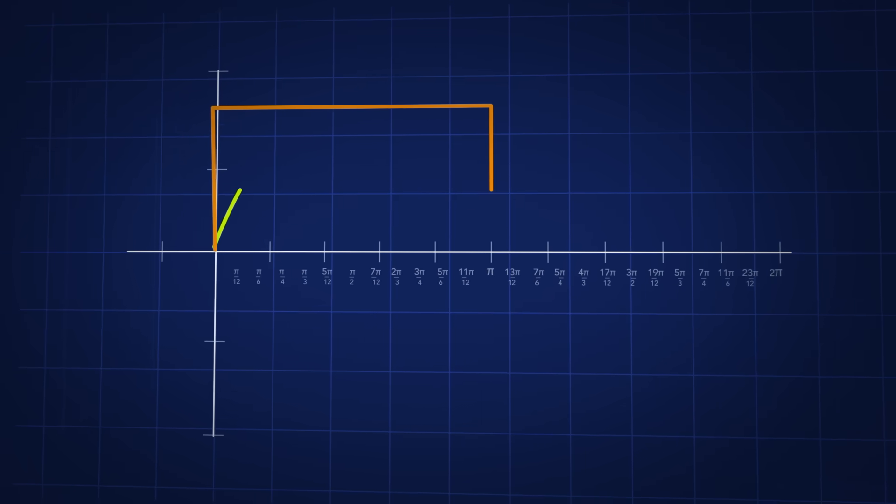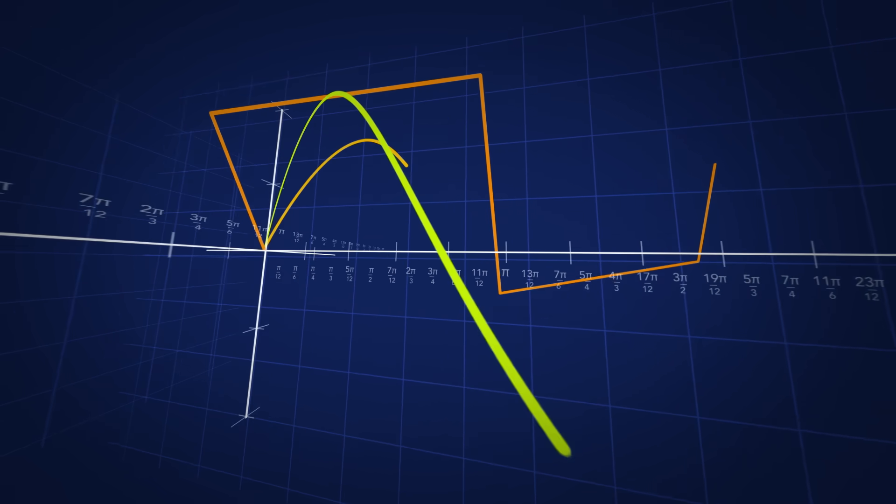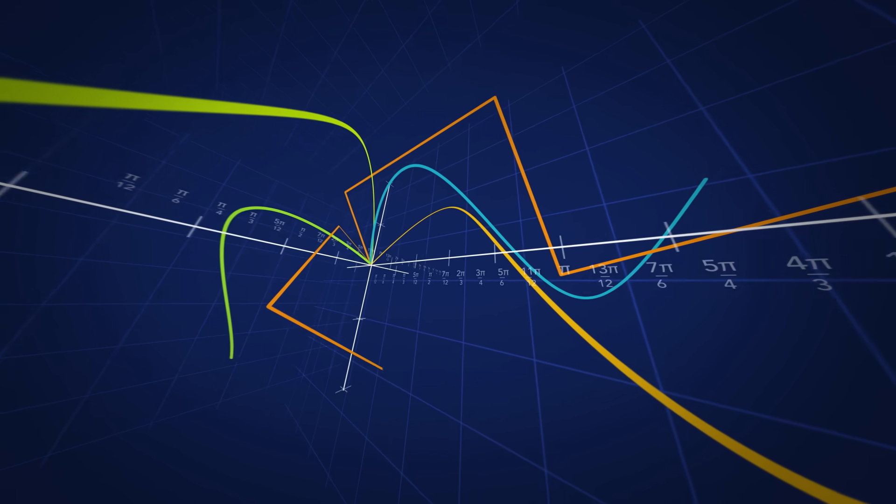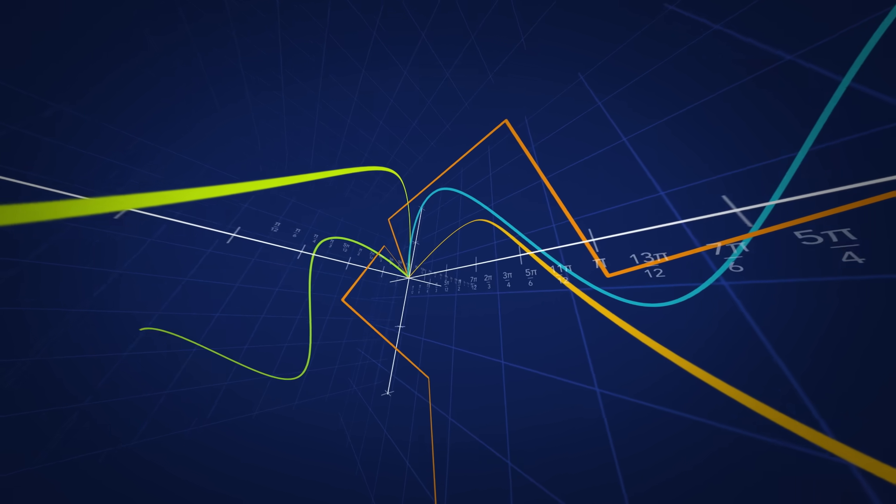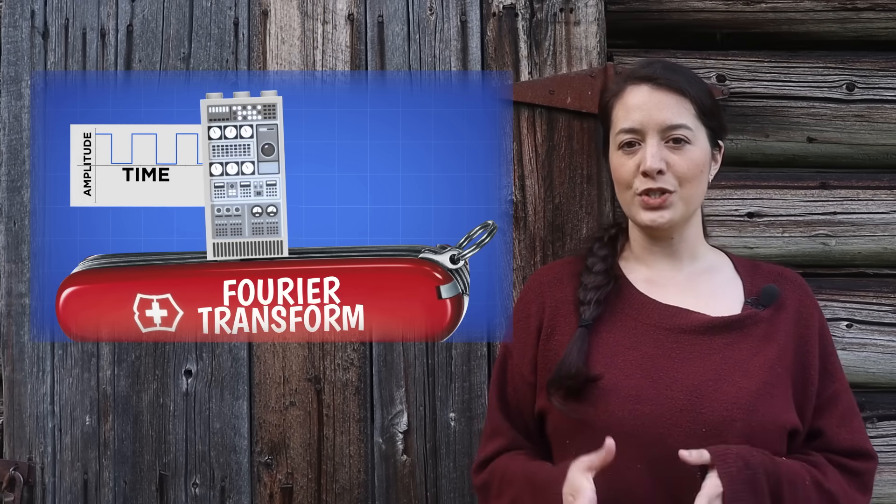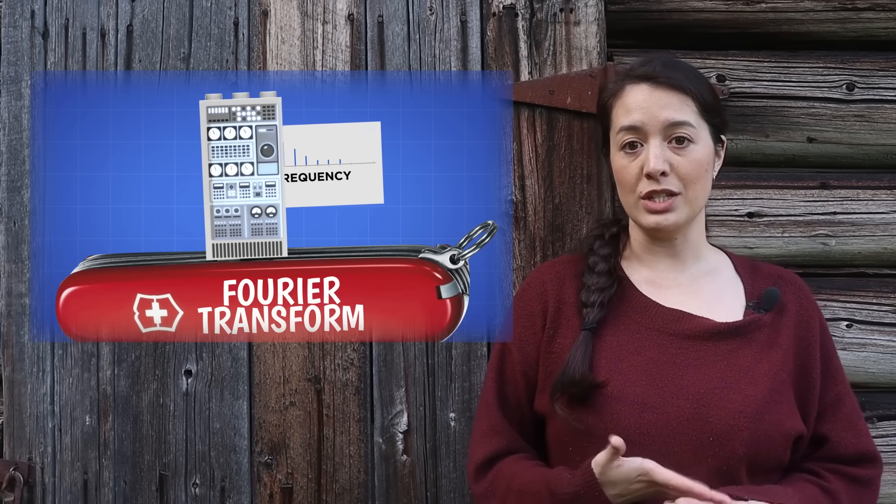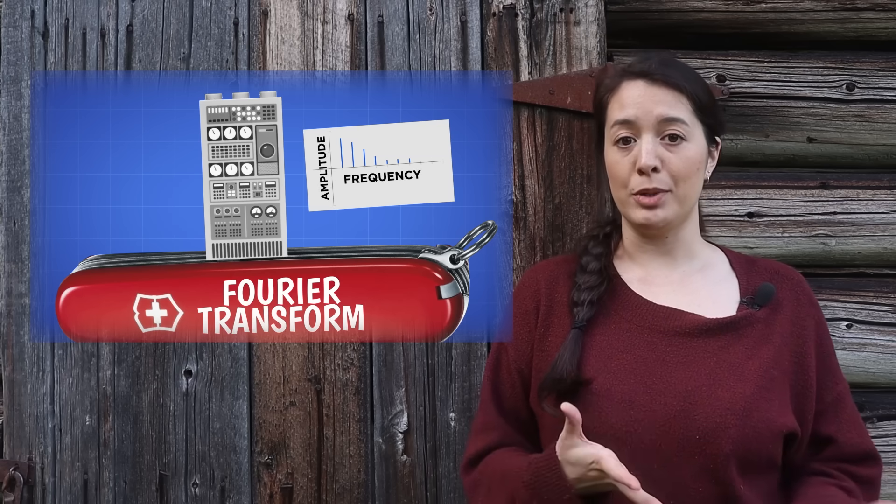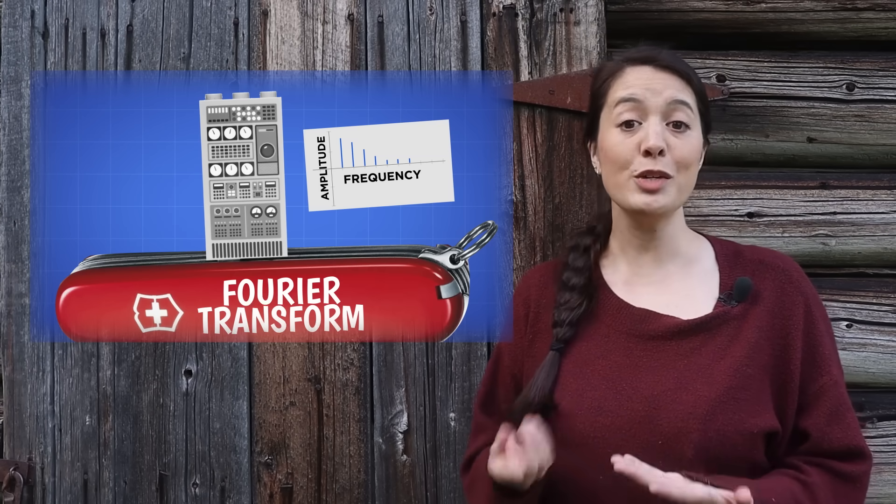Just like we can change the basis of a vector space, choosing new coordinates to describe the same vector, we can also change the basis in function space. We started with a function expressed as amplitudes at an infinite number of time positions, and we changed the basis so that it was described in terms of amplitudes at an infinite number of frequency values.